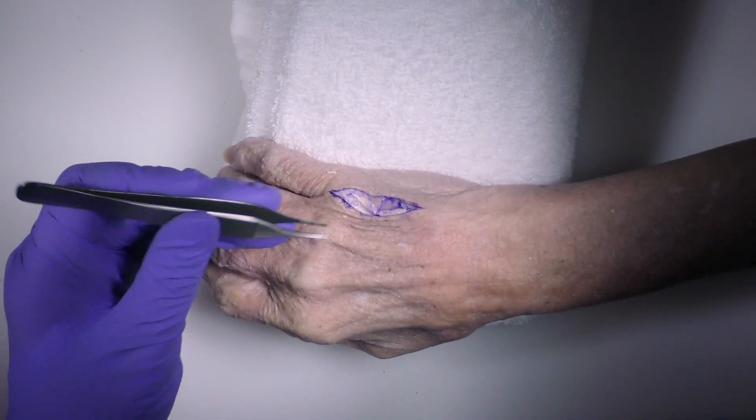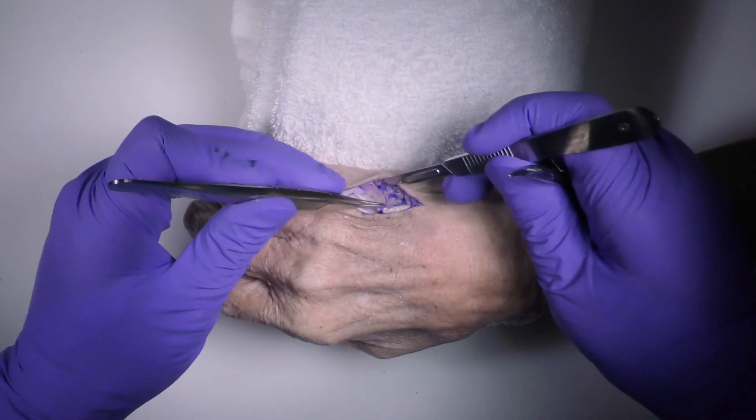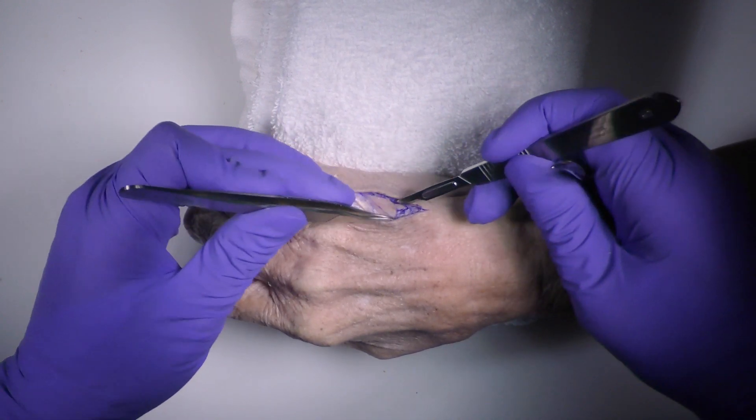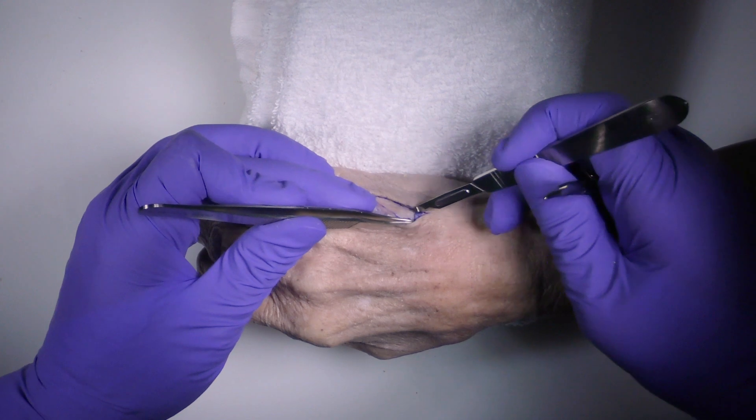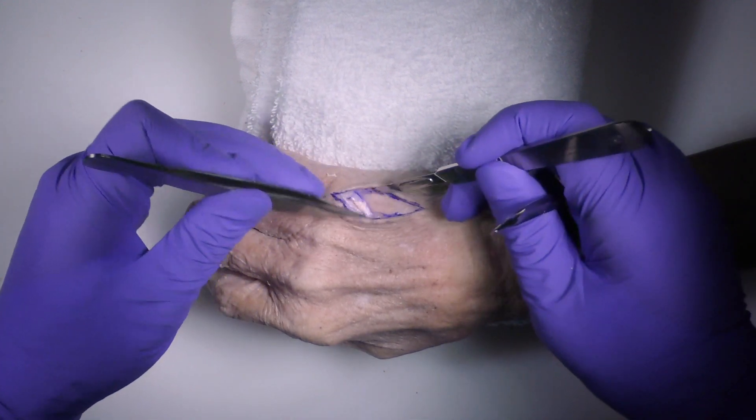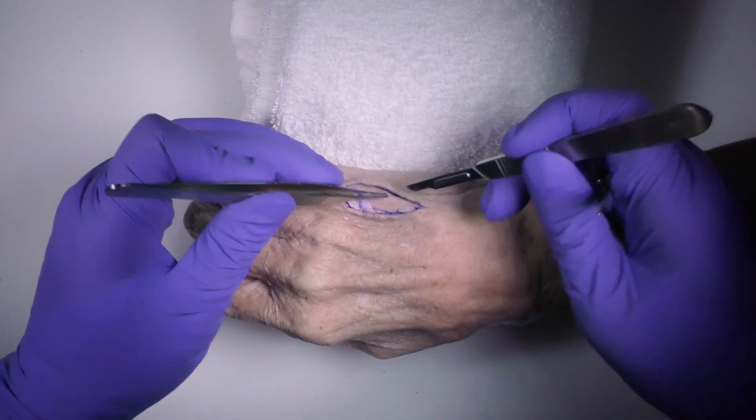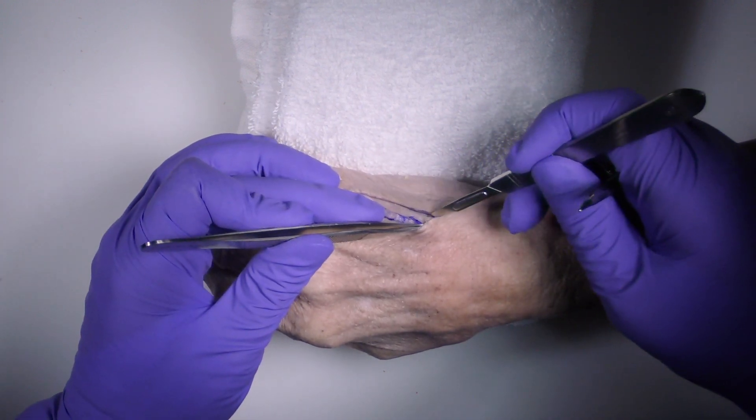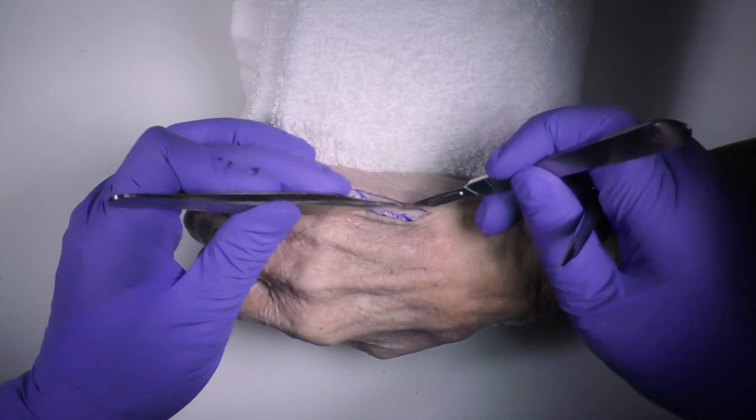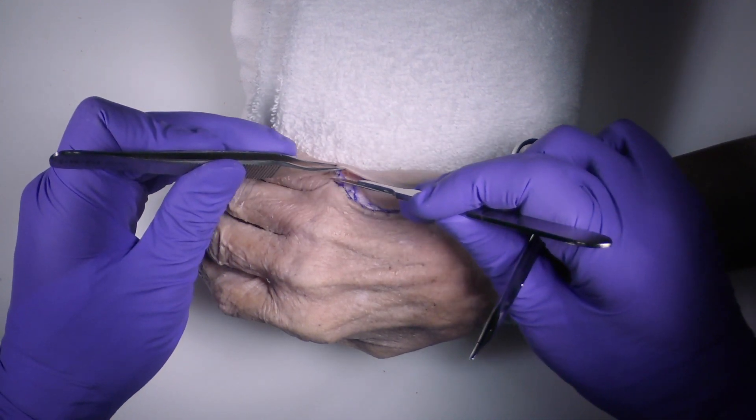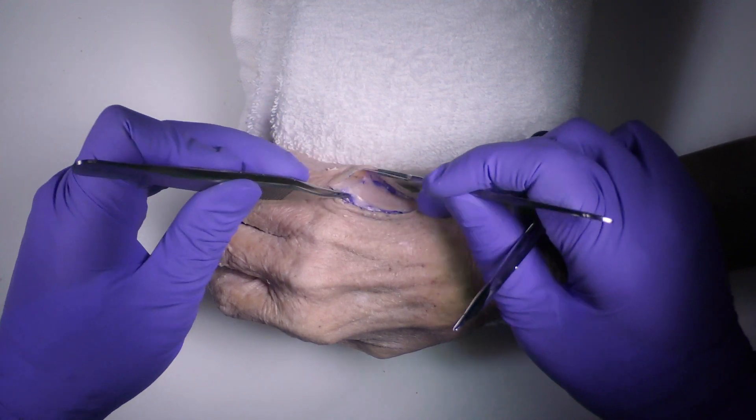So typically we go ulnar to that. And we for the most part just leave it alone. We don't want to do much with it. When you're dealing with the other fingers, you often have to go through what we call the juncture tendinae to mobilize that space. So we'll do that if we need to. But here, the advantage of this technique is we really don't have to do that, which is nice.